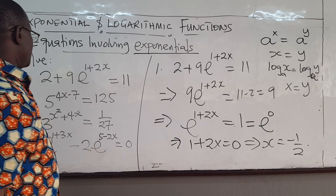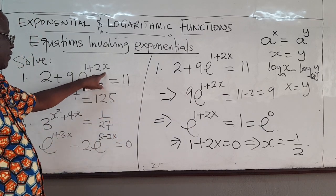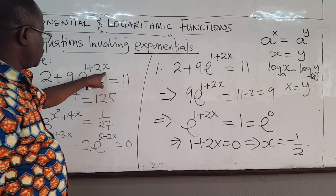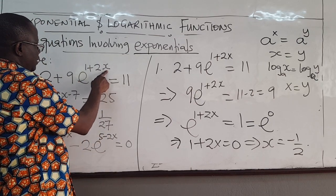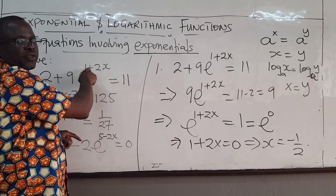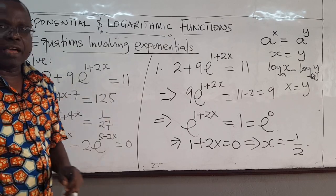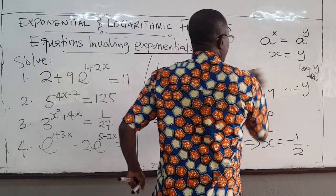Good. So you can always check your answer by putting the answer back here. If I put x = -1/2 here, I'm going to have -1 here. That would be 1 - 1 = 0, e^0 = 1, so I'm left with 9 + 2, which equals 11.